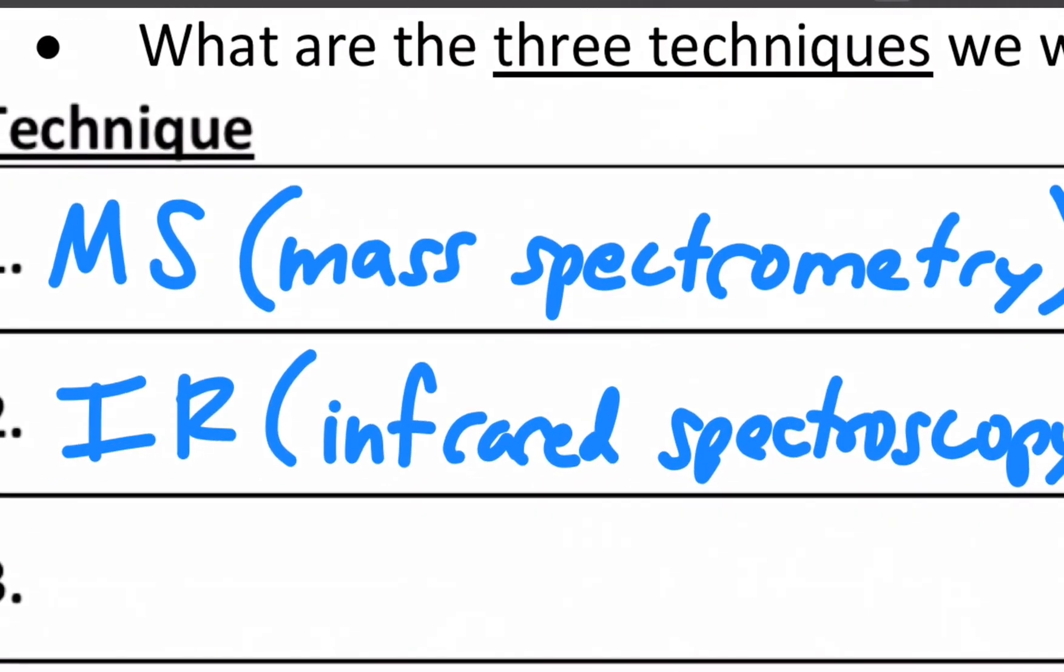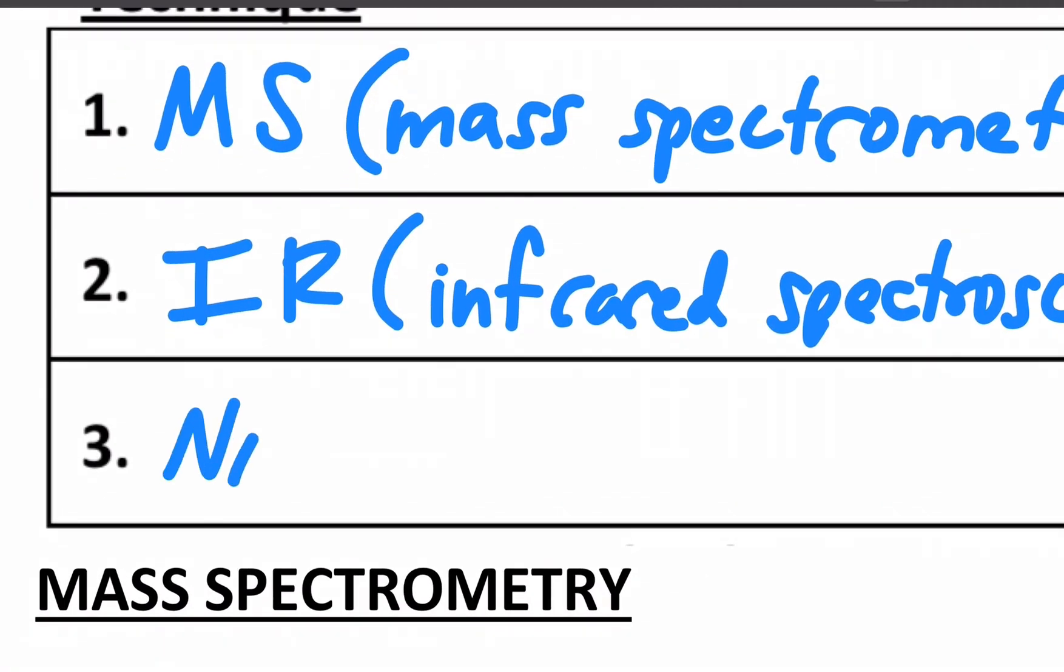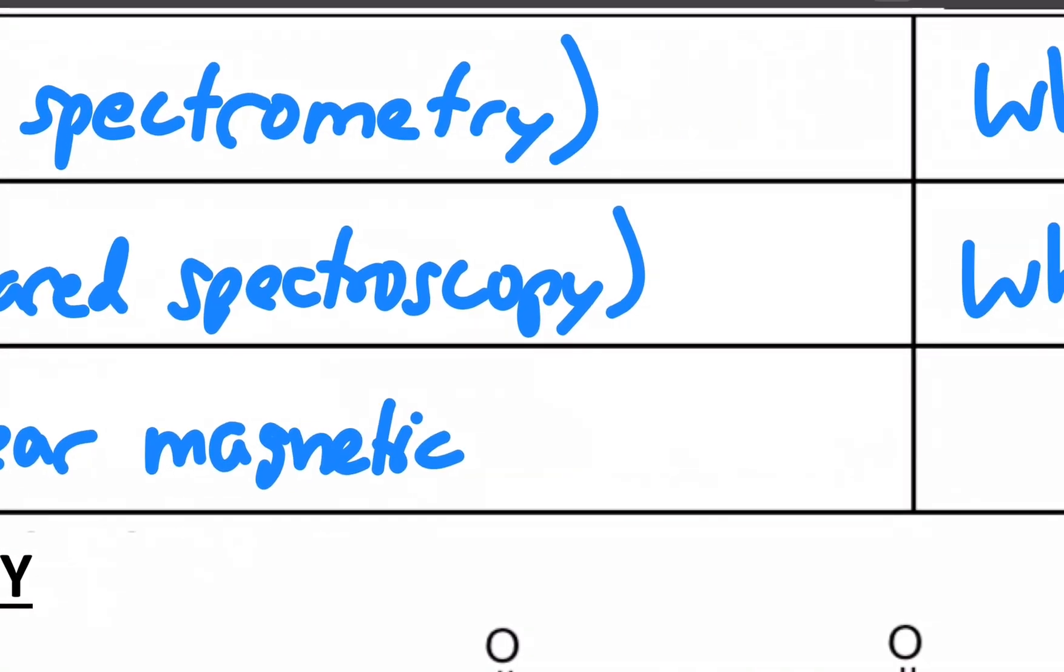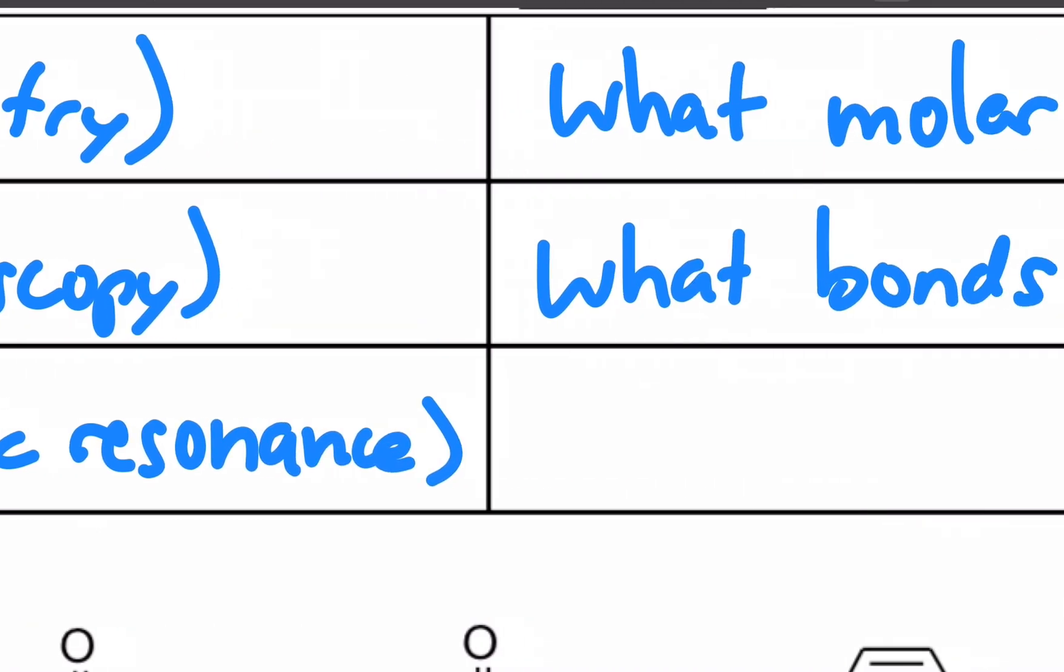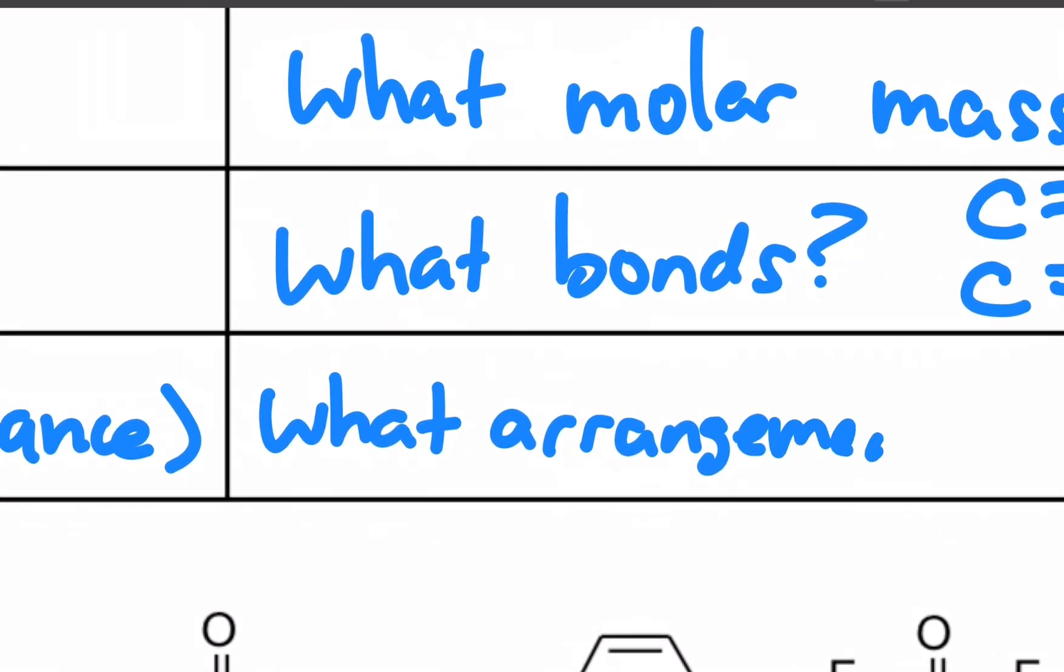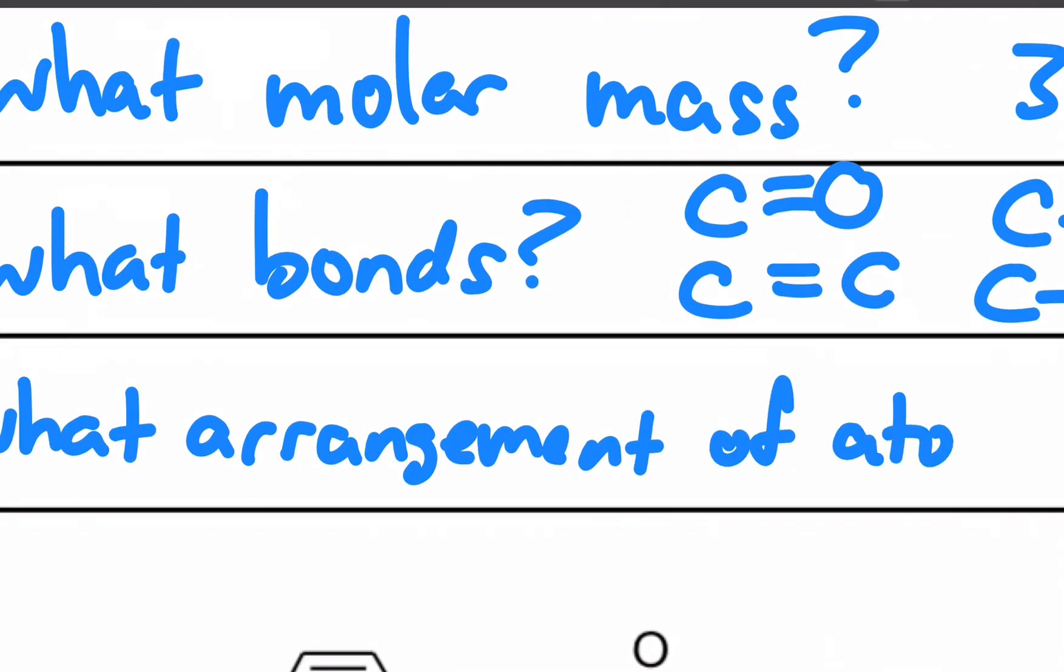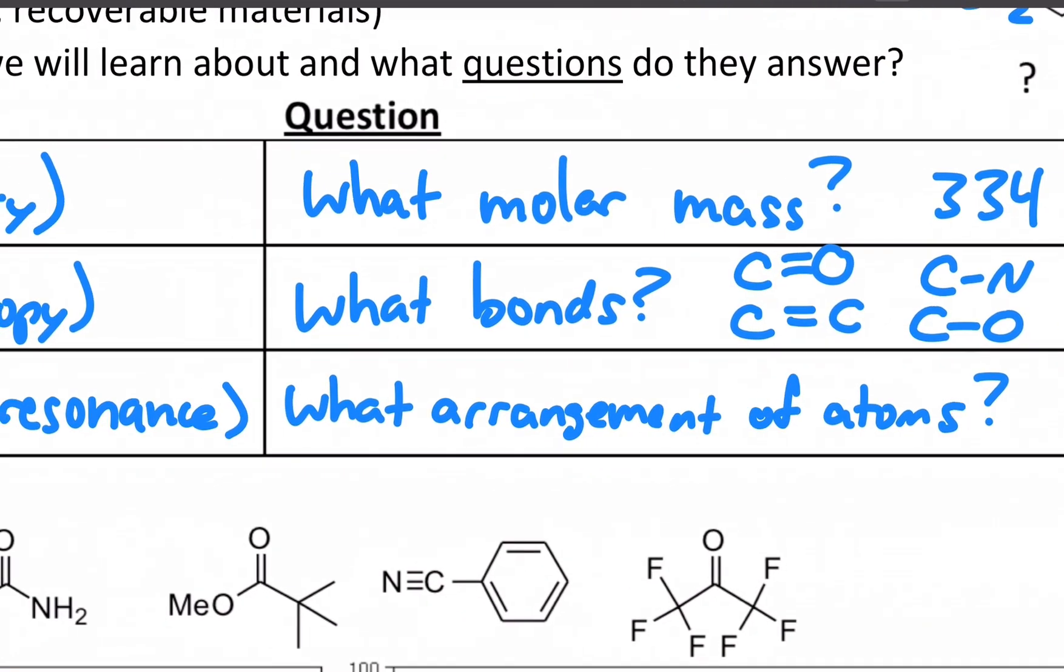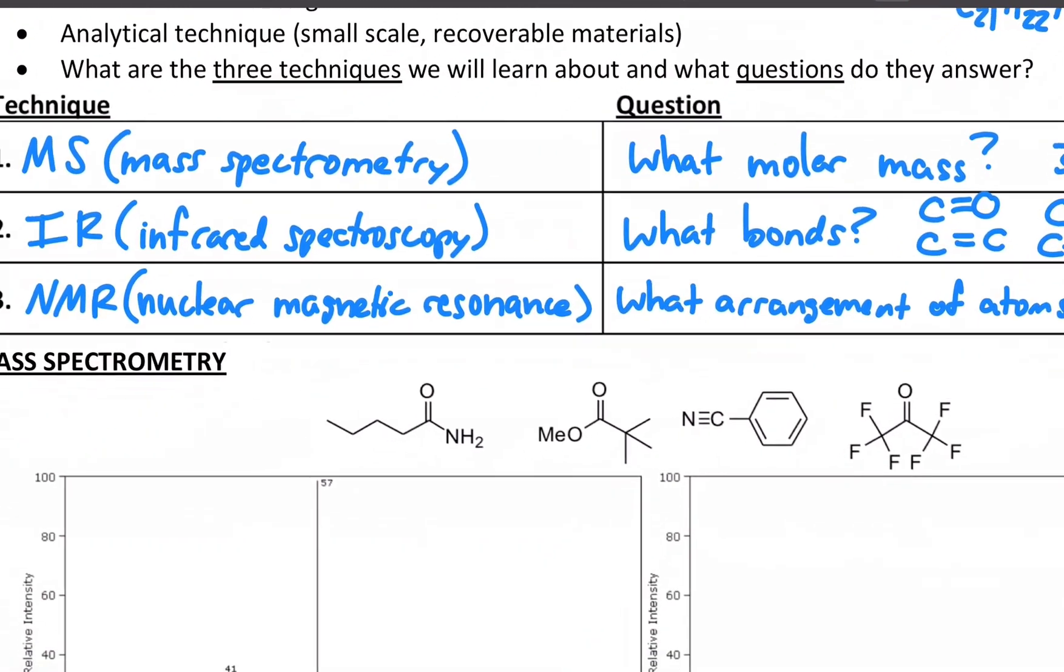Thirdly, the one we're going to spend the most amount of time, but not for a couple of lessons from now, is called NMR. That stands for Nuclear Magnetic Resonance. And that answers essentially what arrangement of atoms. We're going to get into NMR very specifically in a couple of lessons from now. But in this video, we're going to look specifically at mass spectrometry.